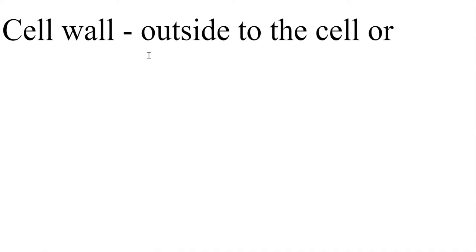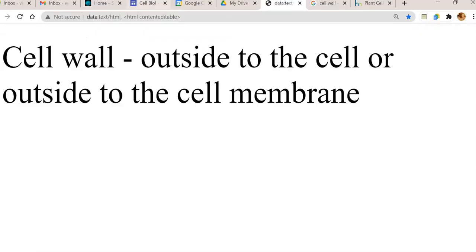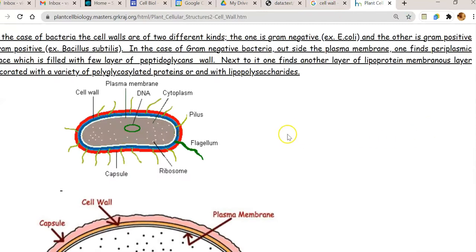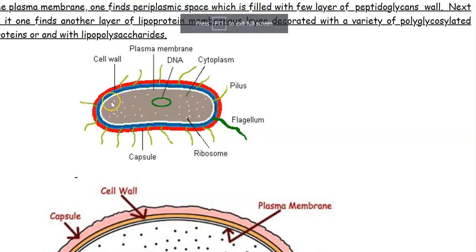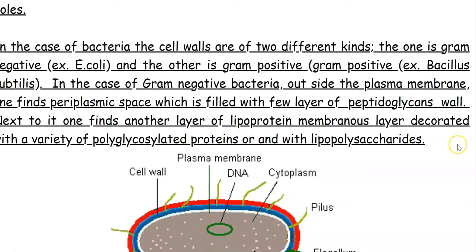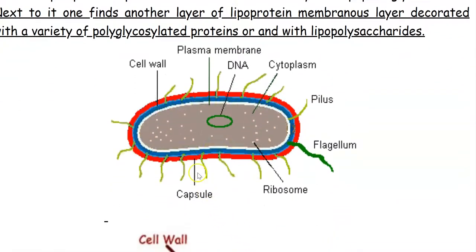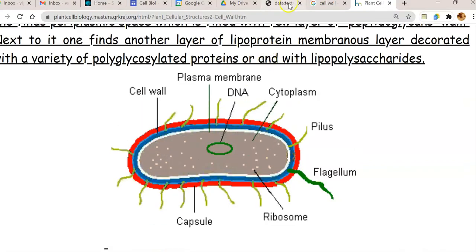The cell wall is present outside the cell — that is, outside the cell membrane. You can visualize this in the image of a bacterial cell. The red color refers to the capsule, found completely external to the cell. The white color coating refers to the plasma membrane, while the blue color coating outside the plasma membrane represents the cell wall.